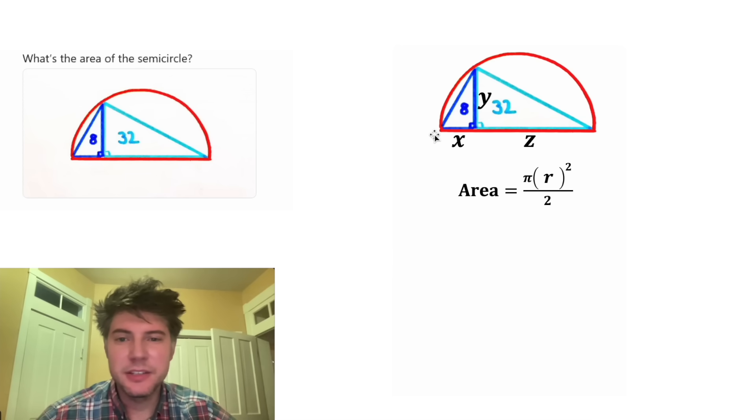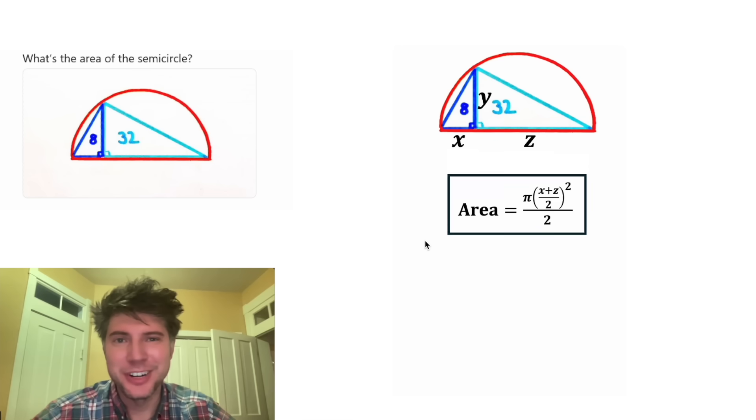But in the place of the radius, let's do half of the diameter. And the diameter for this is X plus Z. So the area is equal to pi X plus Z over 2 squared divided by 2. This looks important. Let's put a box around it. And this is what we're trying to solve for.